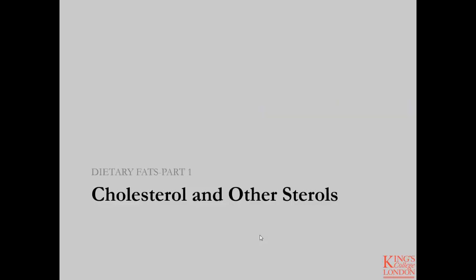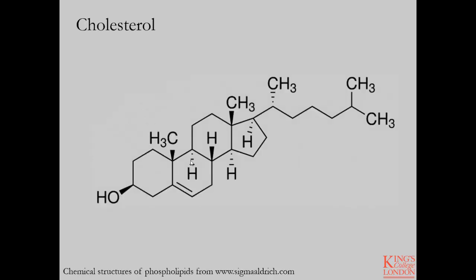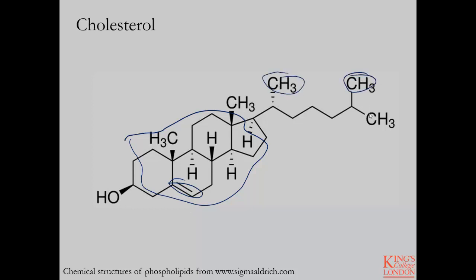Next we're going to touch on cholesterol and some of the other dietarily important sterols. This is the chemical structure of free cholesterol. You can see the generally conserved sterol ring structure here in the center — most if not all sterols tend to have this structure conserved within them, with variations in the level of saturation of the bonds within the ring as well as the side groups attached to this ring.